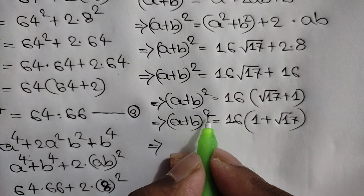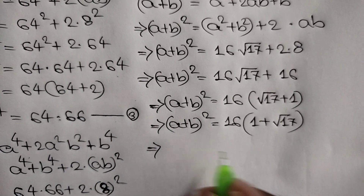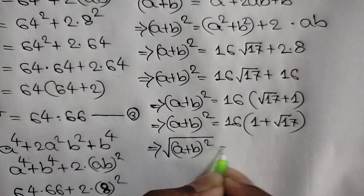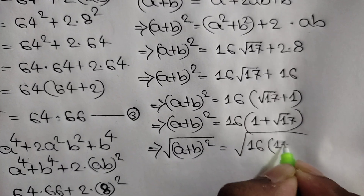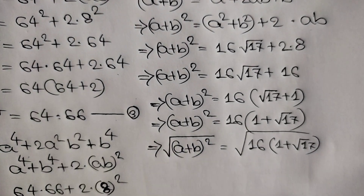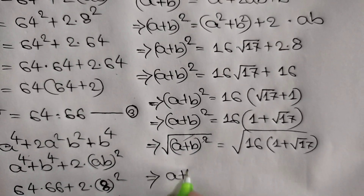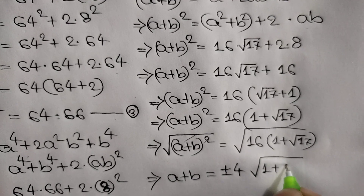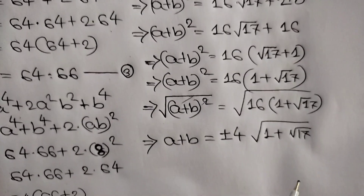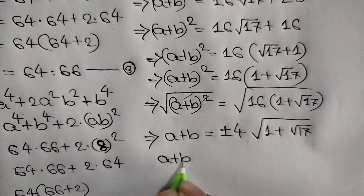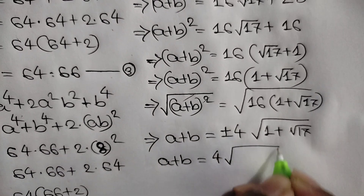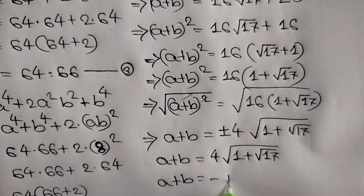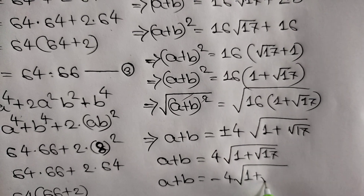Now, to remove the square, we apply square root to both sides. So the square root of a plus b whole squared is equal to the square root of 16 times the quantity 1 plus square root of 17. Cancelling the square root with the square, a plus b is equal to plus or minus 4 times the square root of 1 plus square root of 17. So there are two solutions: a plus b equals positive 4 square root of 1 plus square root of 17, or a plus b equals negative 4 square root of 1 plus square root of 17.